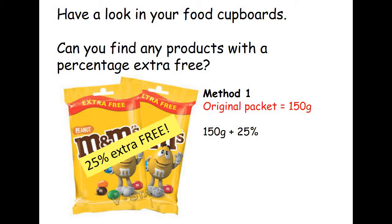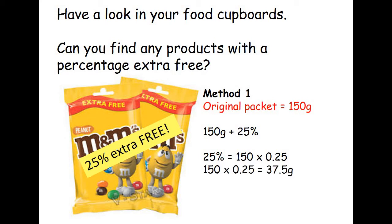Method one uses turning a percentage into a decimal. I've changed 25% into a decimal — 0.25. To turn a percentage into a decimal, you simply divide by 100. You then multiply the original amount by the decimal, which gives us 37.5 grams. That's a quick and easy way to find 25%. Because we want to increase that onto the original, we add it to 150 grams, and the new packet now has 187.5 grams.